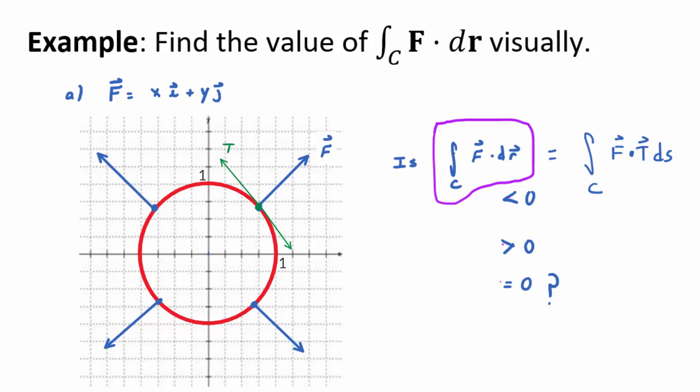Either way, those two vectors, T and this particular value from F, they are orthogonal. Because F is pointing radially outward from the origin, T is tangent to the curve. So what's the dot product between two orthogonal vectors? Zero. If you add up a whole bunch of zeros, you get zero. Does that make sense?